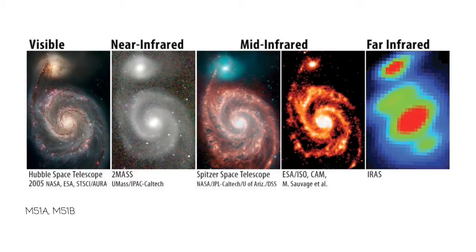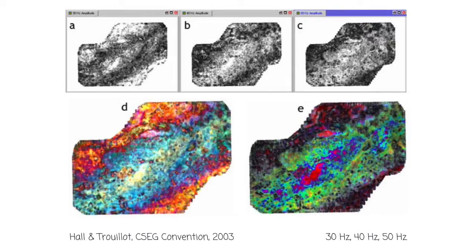We've all seen lots of pretty RGB displays of seismic data, where we kind of map different frequencies to the red, green and blue channels of the color image. But I dare say we're still sort of learning how to best use displays like that and how to interpret them.